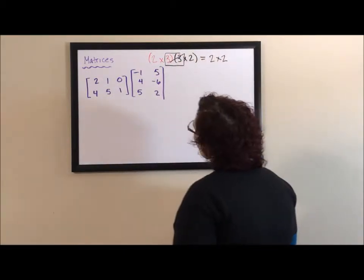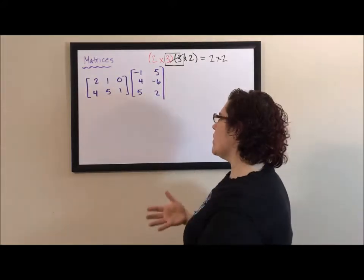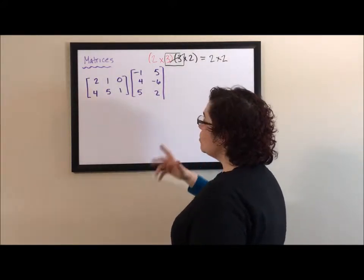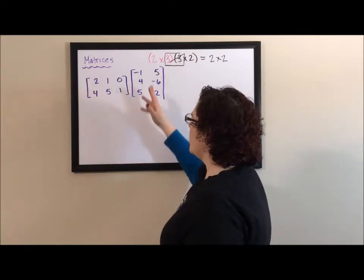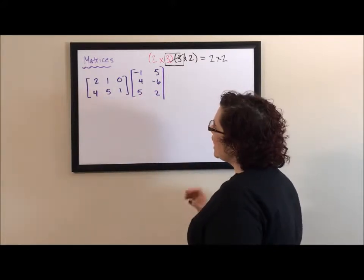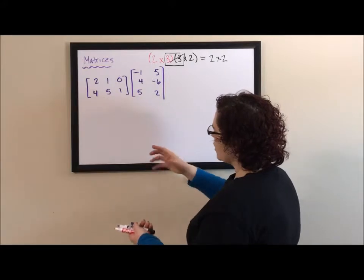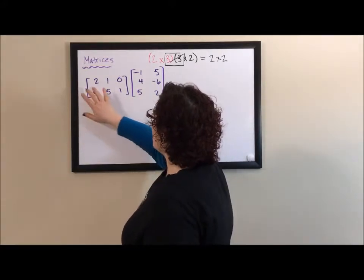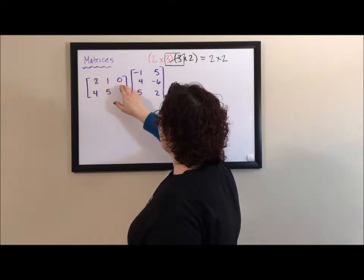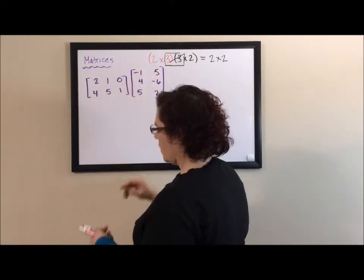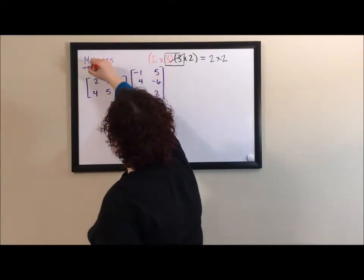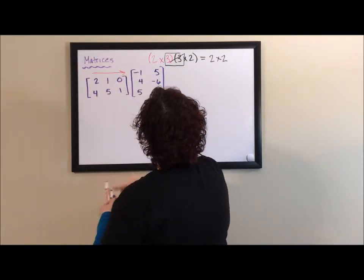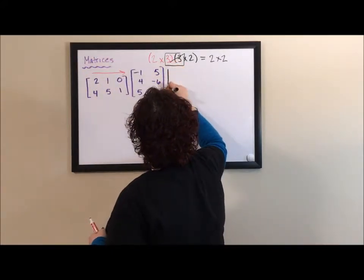So here's how this works. To figure out the dimension of a matrix, you go row by column. To multiply, you also go row by column. To find the first element in the first row, you multiply the first row of the first matrix by the column of the second. So we're going to be going across this matrix and down this matrix.